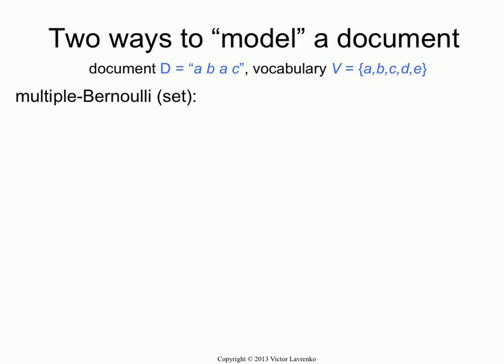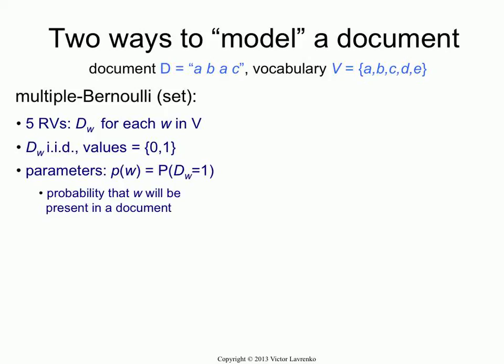What that means is that when you're modeling a document, this document becomes five random variables. We have a random variable DW for each word in the vocabulary, so this document is represented by five variables. The DWs are Bernoulli — they take on values 0 or 1 — and they're independent and identically distributed. So the parameters of the multiple Bernoulli model are the PW, and what PW means in this case is the probability that the word occurs in a document — that is, the probability that W equals 1.